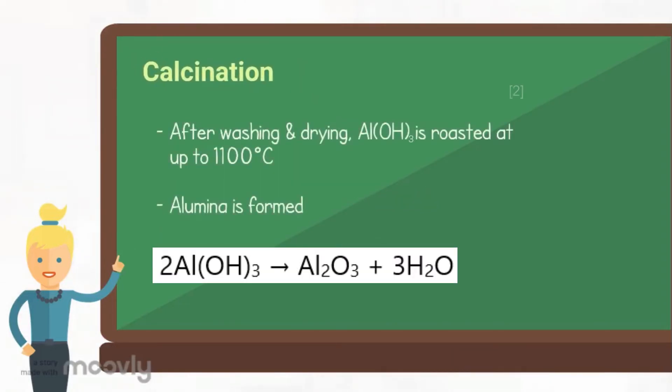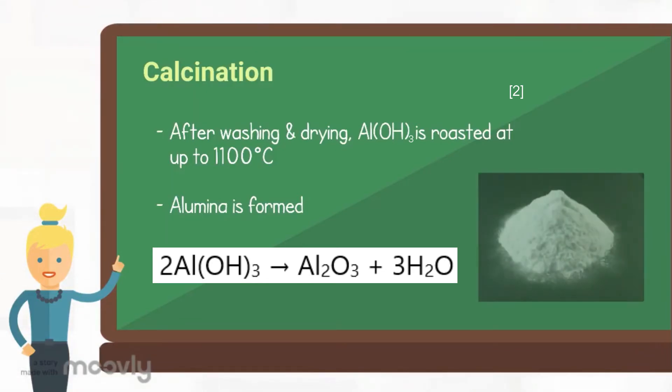Lastly, aluminium trihydroxide is roasted at up to 1100 degrees Celsius during the calcination process, and here comes the formation of alumina.